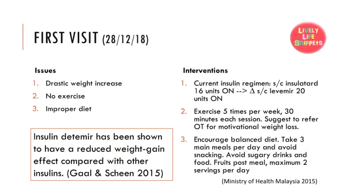The first visit had a few issues. The first was drastic weight increase since insulin initiation. As a result, subcutaneous Insulatard was switched to subcutaneous Levemir 20 units at night because insulin detemir has been shown to have a reduced weight gain effect compared with other insulins. The second issue was that the patient did not exercise, so we advised the patient to exercise 5 times per week, 30 minutes each session, and suggested a referral to occupational therapy for motivational weight loss. The third issue was an unbalanced diet. We advised Mr. Ull to take 3 main meals per day, avoid snacking, avoid sugary drinks and food, and encouraged fruit intake post-meal with a maximum of 2 servings per day.